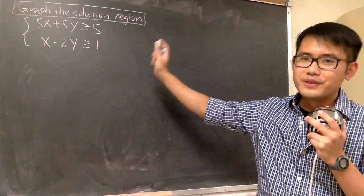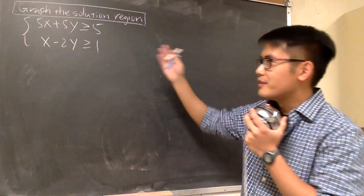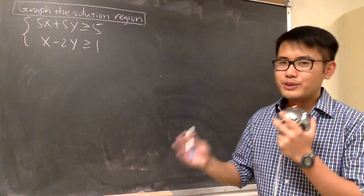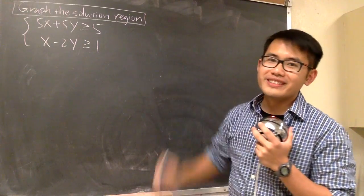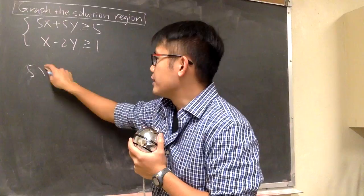Okay, we're going to find the solution region for this system of inequalities. Whenever we are solving a system of inequalities, it's always done by graphing because the solution is going to be a region. So let's go ahead and do the first one right here.